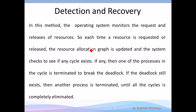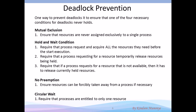For detect and recover: the operating system monitors each request and release. Each time a resource is requested or released, the resource allocation graph is updated to check for cycles. If there is a cycle, the system kills one process to break the cycle. If it doesn't break, it kills another process, and it does this until the deadlock is recovered from.